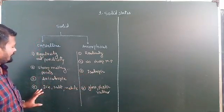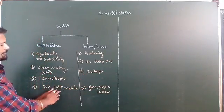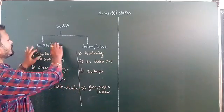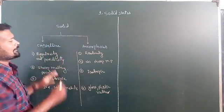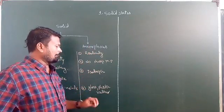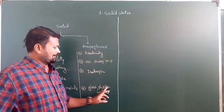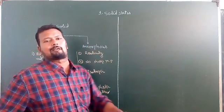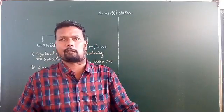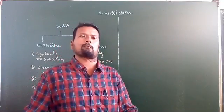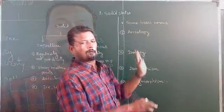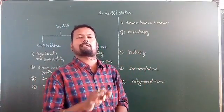When physical properties remain the same in all directions, it is known as the isotropic property. Examples: ice, sand, and metals are examples of crystalline solids, while glass, plastic, and rubber are examples of amorphous solids.